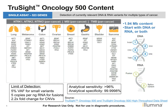TSO500 is a pan-cancer panel that covers 523 genes relevant for DNA and RNA variants across multiple types of cancer. The panel contains 1.94 megabases of content and allows you to start with either DNA, RNA, or both. We have a 5% variant allele frequency limit of detection for small variants, can detect fusions down to 5 copies per nanogram of RNA, and copy number variations at 2.2-fold changes. This is at an analytical sensitivity of 96% and an analytical specificity of 99.998%, so very high specificity at these limits of detection.